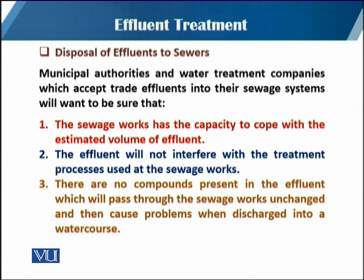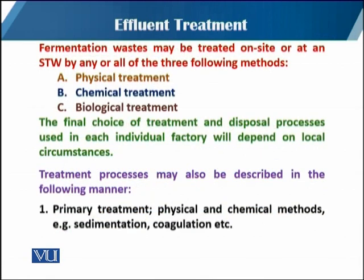There should be no compounds present in the effluent which will pass through the sewage works unchanged and then cause problems when discharged into a watercourse. Fermentation waste may be treated on site or at a sewage treatment plant by one of three methods: physical methods, chemical methods, or biological methods. The final choice of treatment and disposal process used in each individual factory will depend upon local circumstances, local legislation, regulations, and containment level.